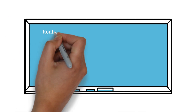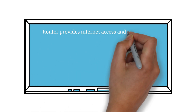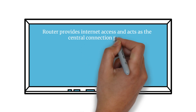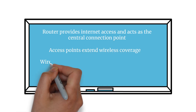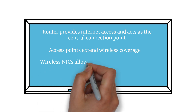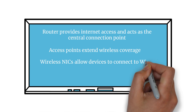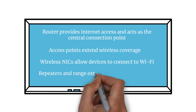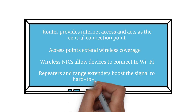Several devices make up a wireless network. The router provides internet access and acts as the central connection point. Access points extend wireless coverage. Wireless NICs allow devices to connect to Wi-Fi. Repeaters and range extenders boost the signal to hard-to-reach areas.